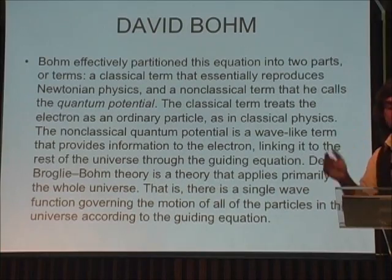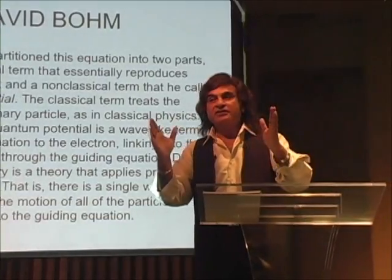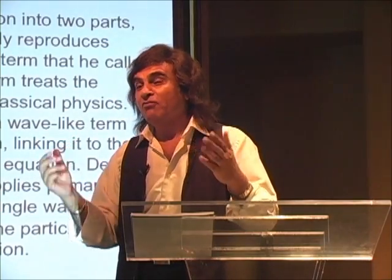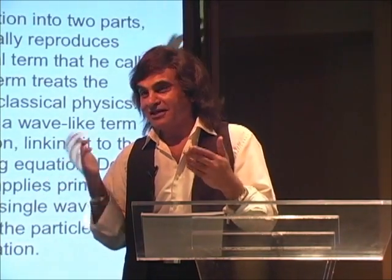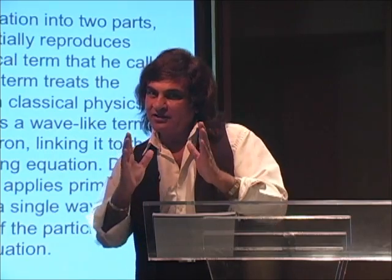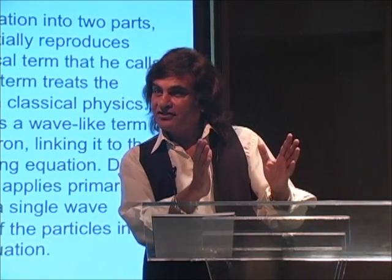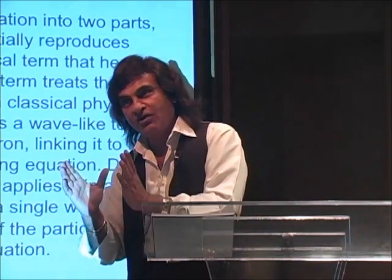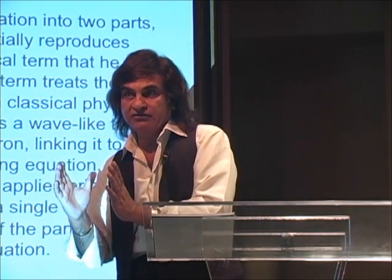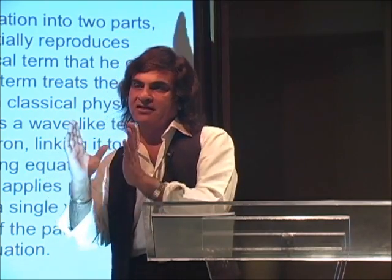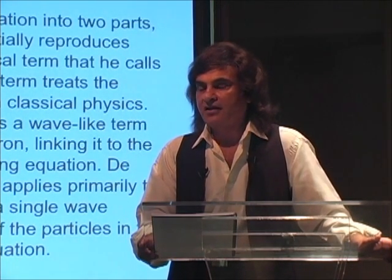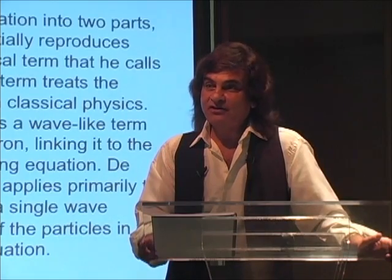David Bohm was famous for this. He took that equation and split it into two — in such a way that even Einstein admitted he was right. In fact, David Bohm was a protégé of Einstein. He said: 'I've taken Schrödinger's equation and split it into two. You can work with it as Newtonian classical physics, or on the non-classical side use it as quantum potential — wave-like — and still get the same answers as any other theories in quantum mechanics.' Einstein said, 'Mathematically, you are right. You split the equation perfectly.'